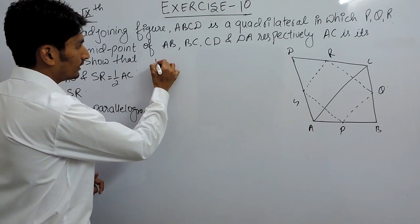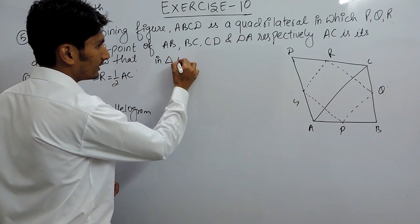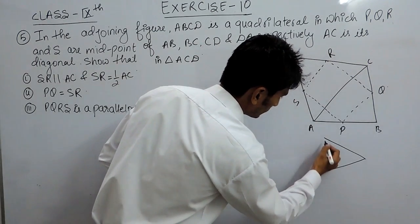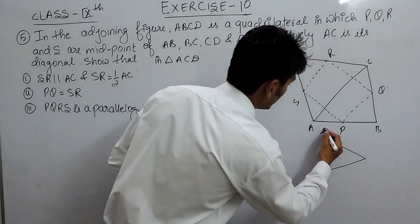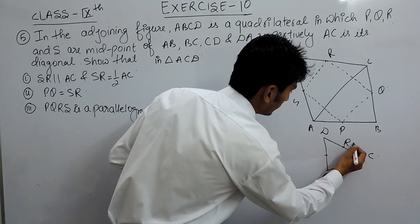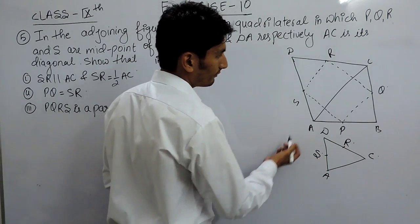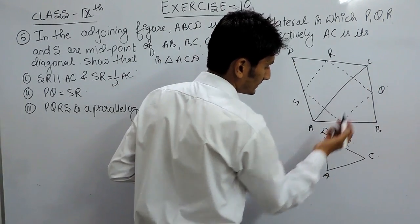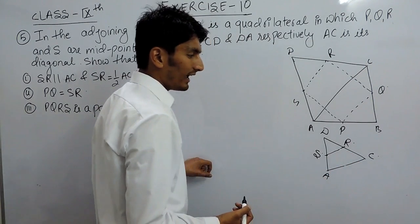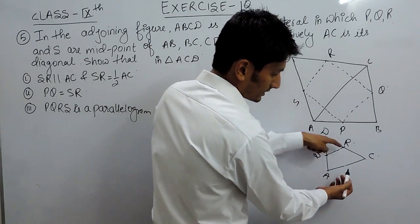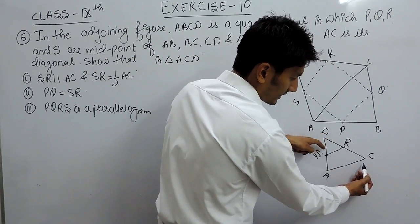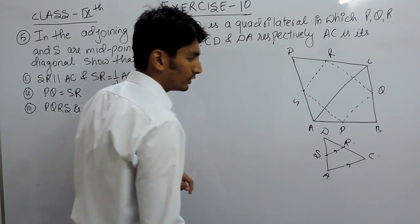First of all, in triangle ACD — where the vertices are D, C, and A — S and R are the midpoints of DA and DC. According to the midpoint theorem, if we join the midpoints of any two sides in a triangle, that line must be parallel to the third side and equal to half of it.